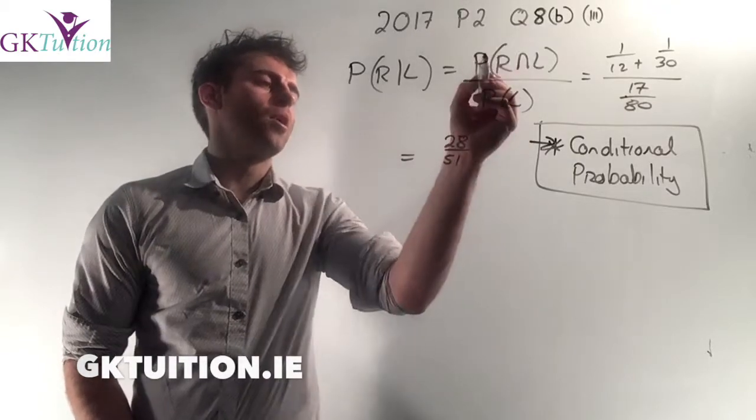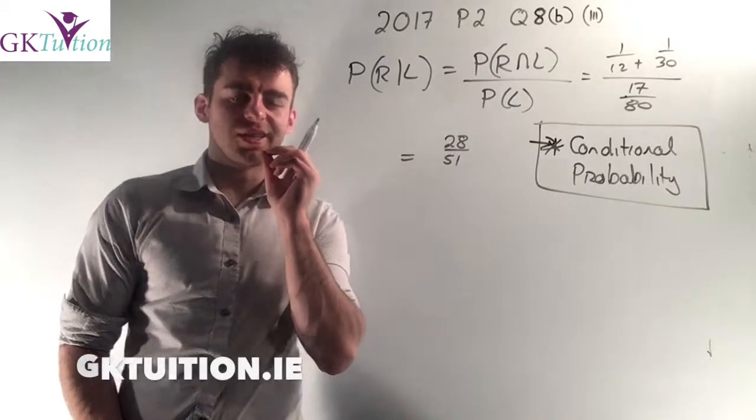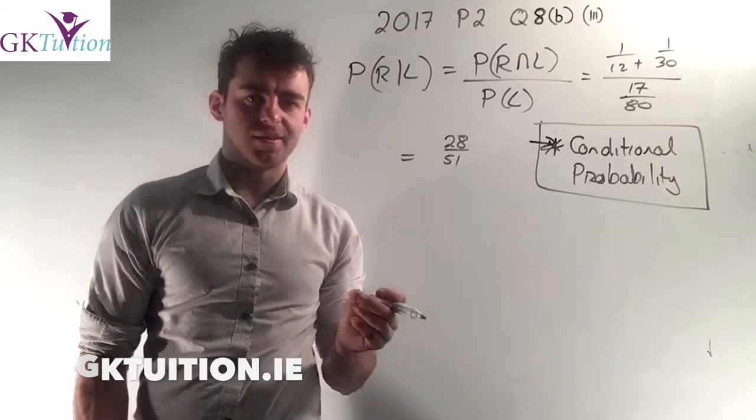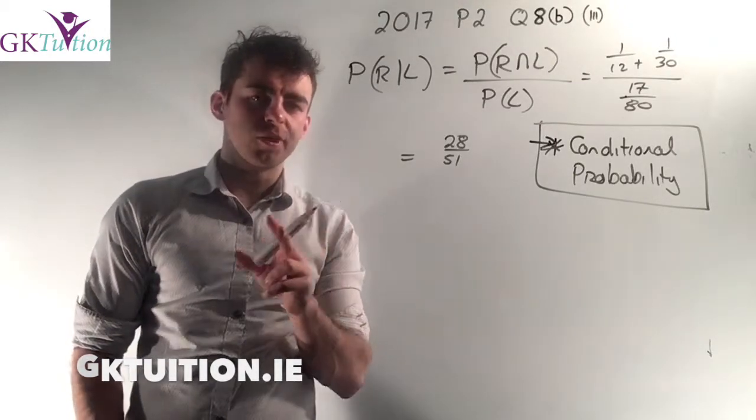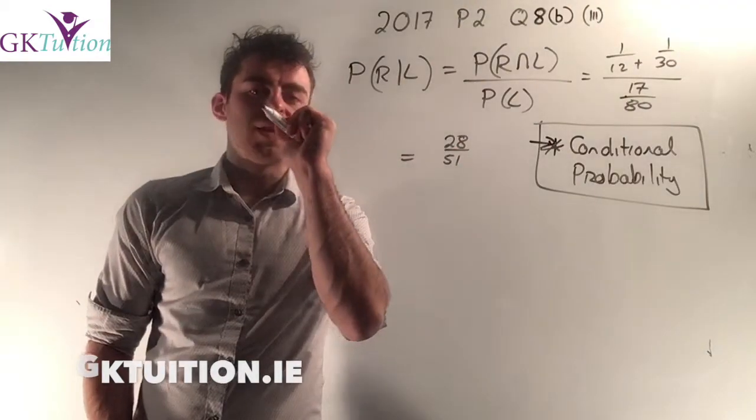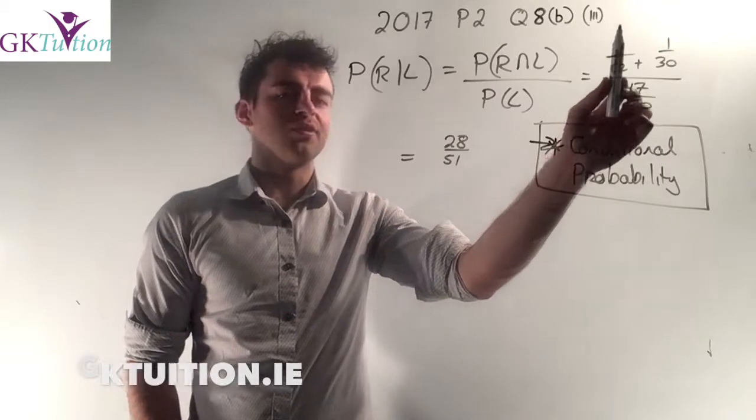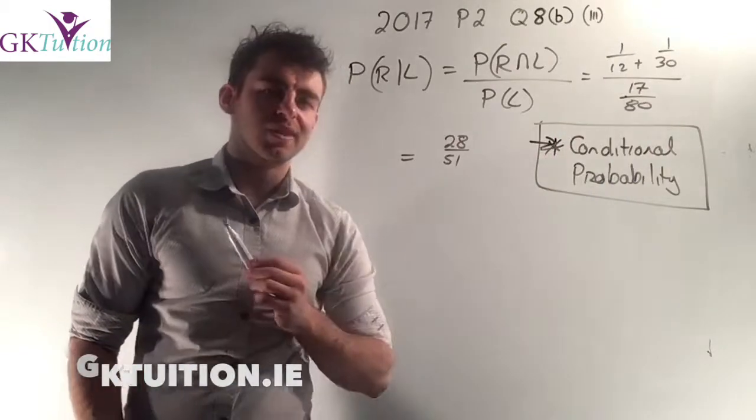So to work out the top, I need to work out the chances of rain intersection L. In other words, the chances that it rained in the morning and you were late. You should recognize the two of your branches in your tree diagram that start off with rain and end with you being late. The first one was there's rain, there's traffic and you're late. The chances of that is one over twelve.